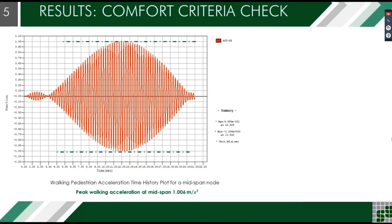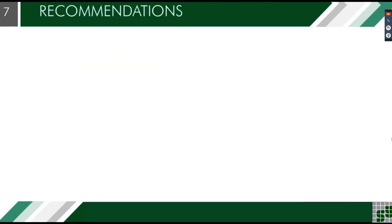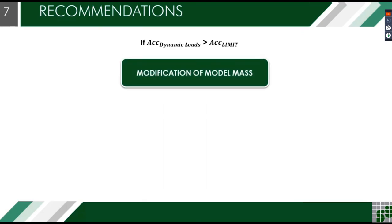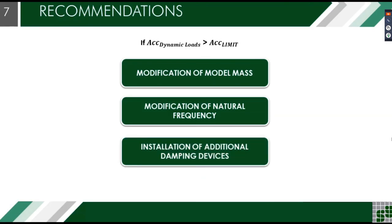As we plot the acceleration response of the structure against the threshold provided by the guidelines, it is within the acceptable range. Therefore, the bridge serviceability is acceptable. When acceptable levels of acceleration cannot be reached, the structural dynamic performance should be improved. This may be achieved by increasing the natural frequencies to avoid the range of footfall frequencies, or by increasing structural damping. Increasing the natural frequencies generally translates into increasing structural stiffness, which increases mass and produces a counteracting effect. The increase in structural damping is typically achieved by adding damping devices, which is costly in terms of construction.